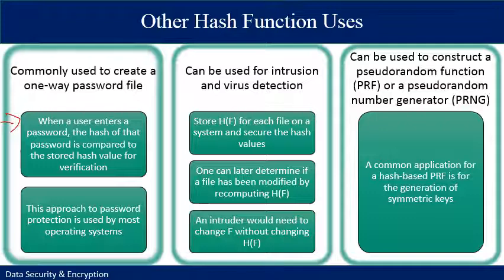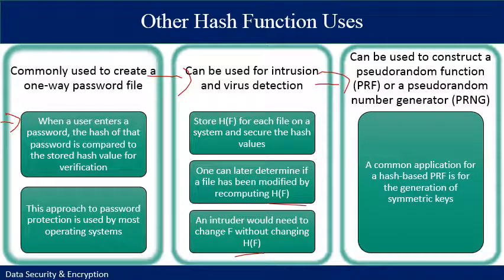This approach to password protection is used by most operating systems. Hash functions can also be used for intrusion and virus detection. You can store a hash value for each file on a system and secure the hash value; one can later determine if a file has been modified by recomputing the same hash function on the file. An intruder would need to change the value of a file without changing the hash value. Additionally, a cryptographic hash algorithm can be used to construct a pseudo-random number generator (PRNG) or pseudo-random function, with a common application being generation of symmetric keys.